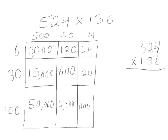As we complete our area model, we find that when 524 is multiplied by 6, we get 3,144. When 524 is multiplied by 30, we get 15,720. And when 524 is multiplied by 100, we get 52,400.